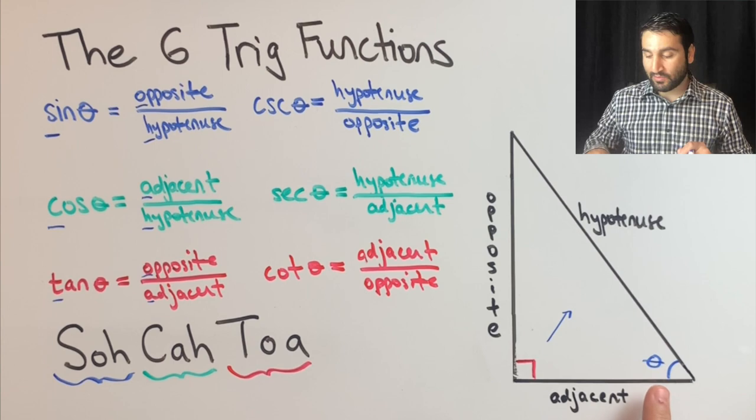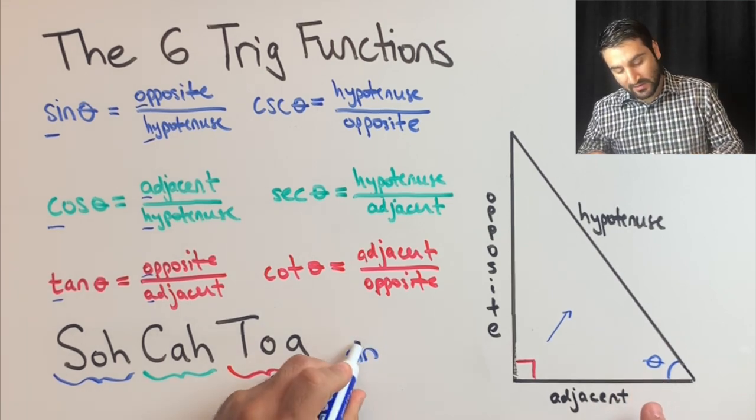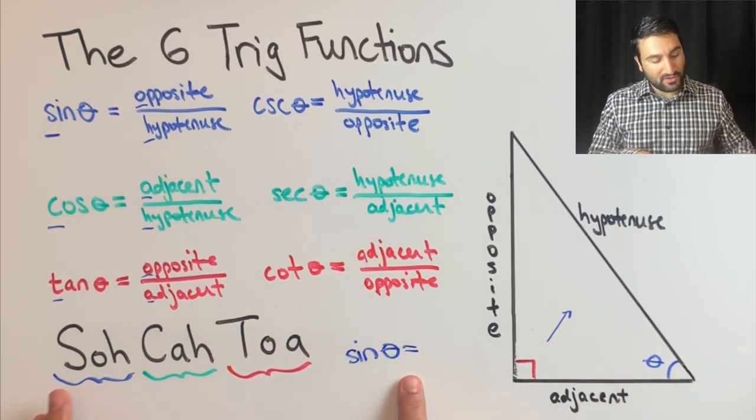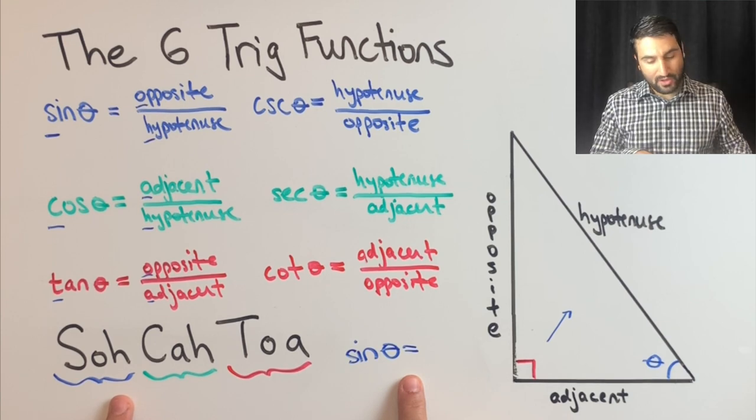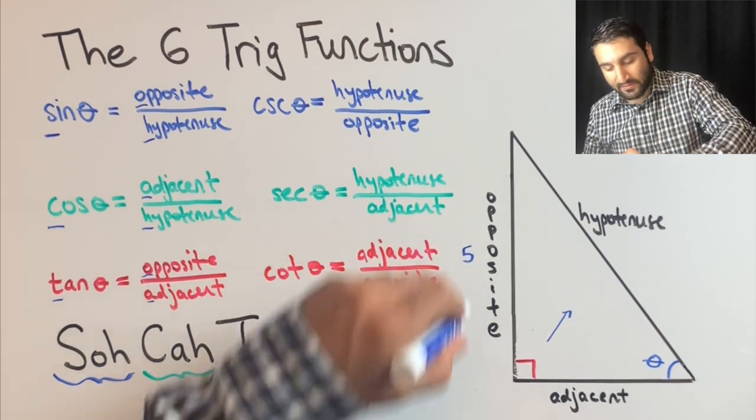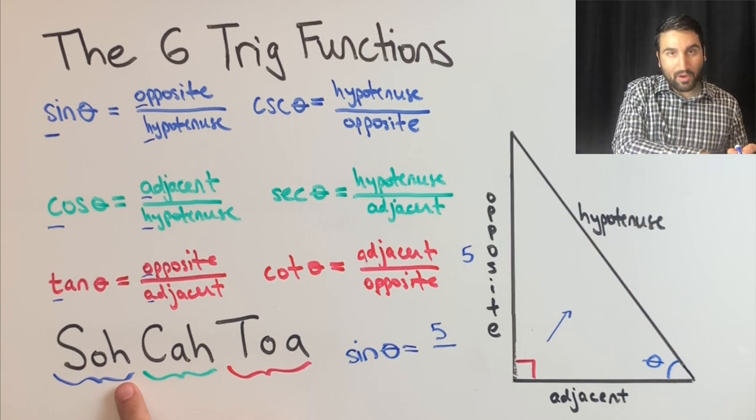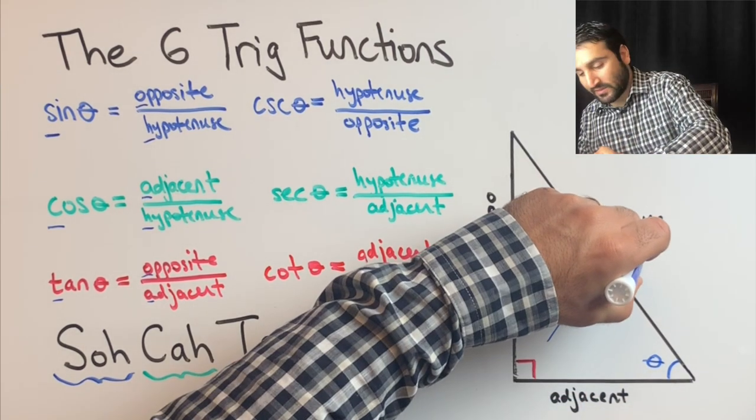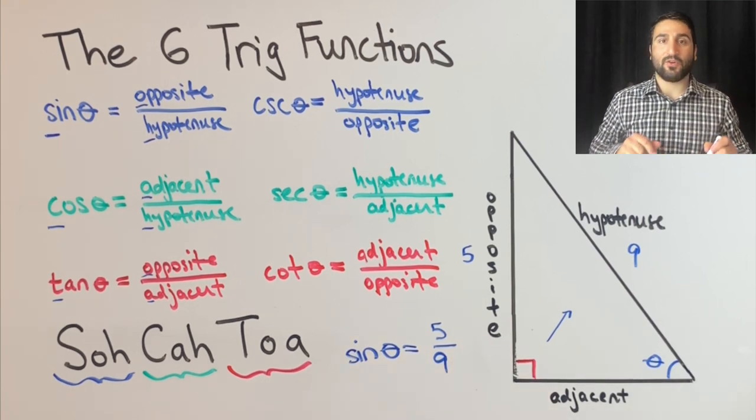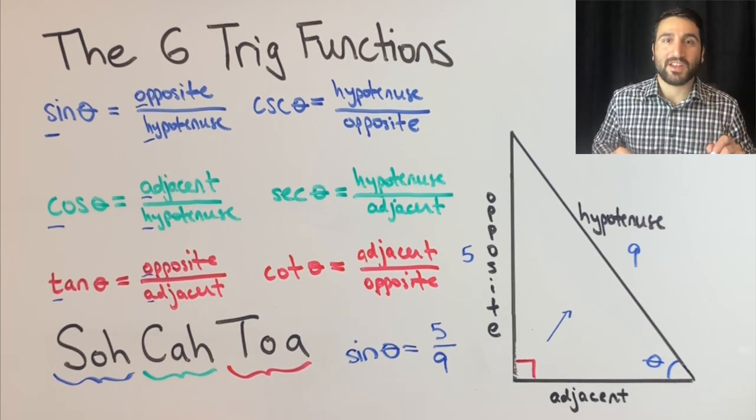So for example, if you wanted to find the sine of this angle, it's going to be S-O. This opposite length, let's give that a length of five. Opposite over hypotenuse, let's give this a length of nine. It would be sine of theta equals five over nine. And that's how you use SOH CAH TOA. See you in the next one.